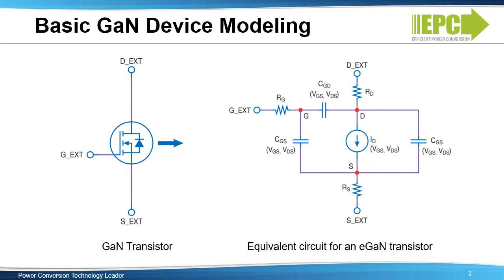Although enhancement mode devices are made to operate similarly to silicon MOSFETs, they cannot be readily modeled with traditional physics-based MOSFET models as the physics of the GAN device is significantly different. There are widely available models for enhancement mode GAN transistors in SPICE. The basic equivalent circuit used in a SPICE model for an enhancement mode GAN transistor is shown on the right.